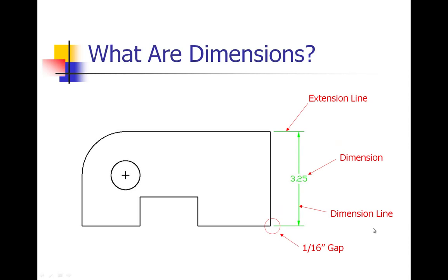A dimension is made of four different components. First, we have a sixteenth inch gap from our green line here to our actual part, and that little gap allows us to know where the part ends and this dimension begins.